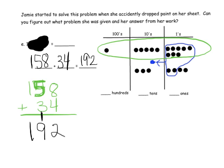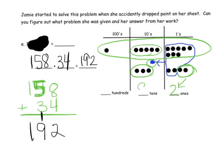Looking at the drawing result: we had 8 plus 4, which equaled 12 ones. We bundled 10 of them, leaving 2 ones — those 2 right here. Then we had 5 plus 1 plus 3, giving us 9 tens, and we have just this 1 in the hundreds column. So we have 1 hundred, 9 tens, and 2 ones, confirming our answer of 192.